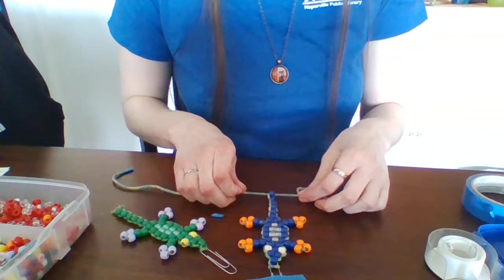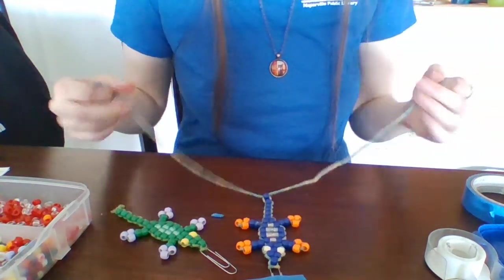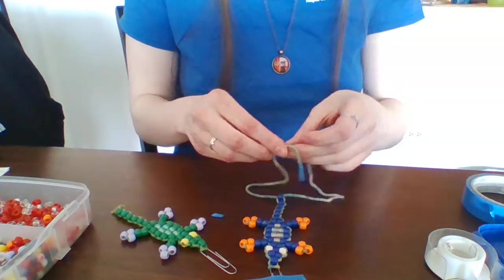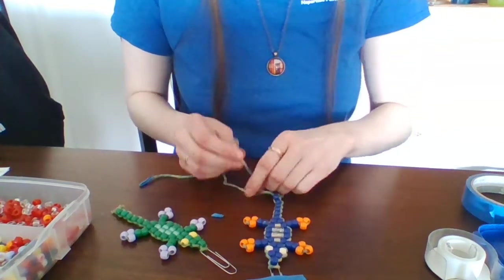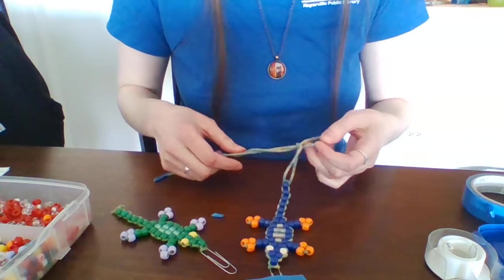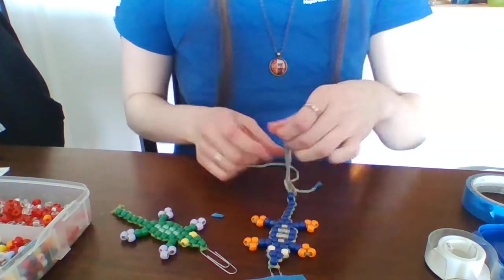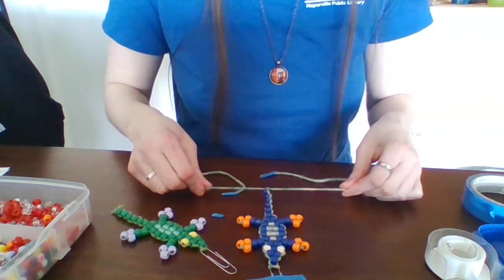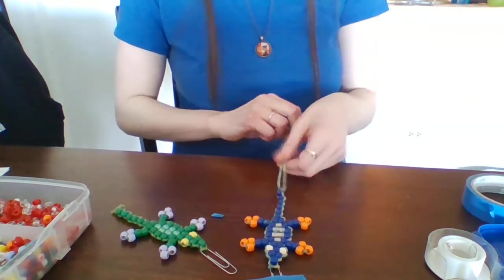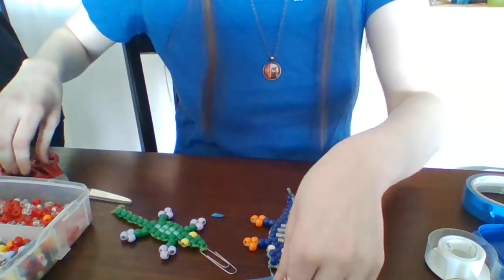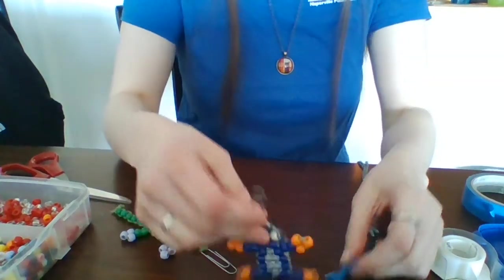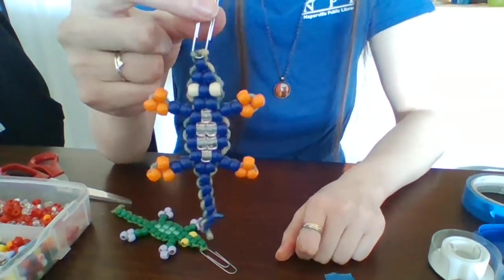Now to finish off your lizard, you're going to take both strings, tie one knot all the way against the bead, and then go ahead and tie another. To finish it you'll take scissors and trim the end, and you are all set with your very own beaded lizard.